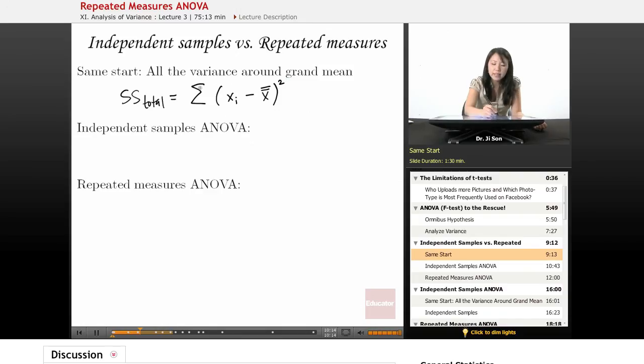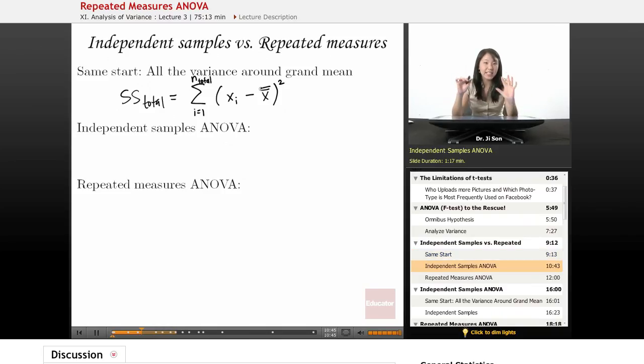And how does this sigma know to do this for every single data point, not just the data points in one sample? Well, the way it knows to do that is because this should say n total. So this is going to go through every single data point in every single sample, and subtract, get the distance from the grand mean, and then square that distance, and then add those squared distances all up. Okay, so that's the same idea to begin with. Now we're going to take this SS total and break it down into its component parts.